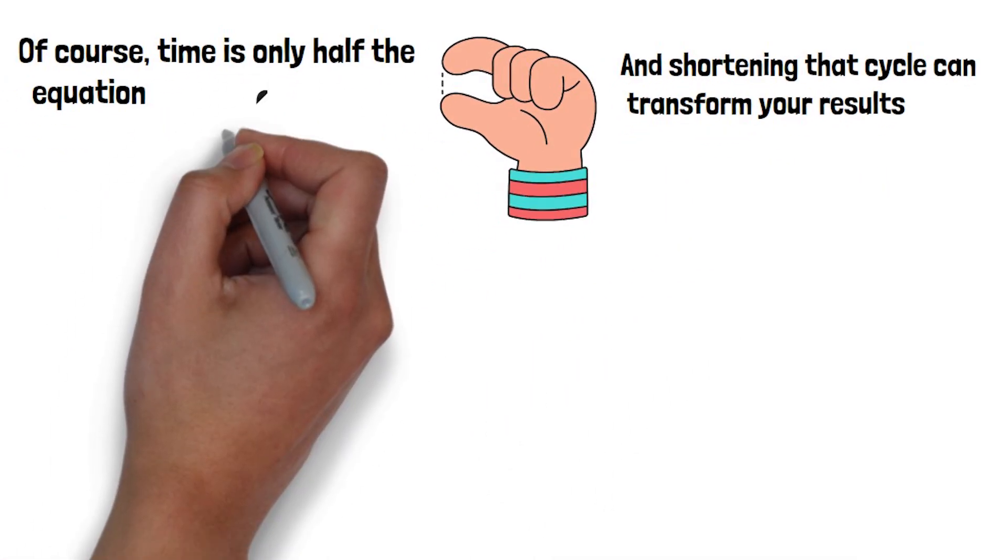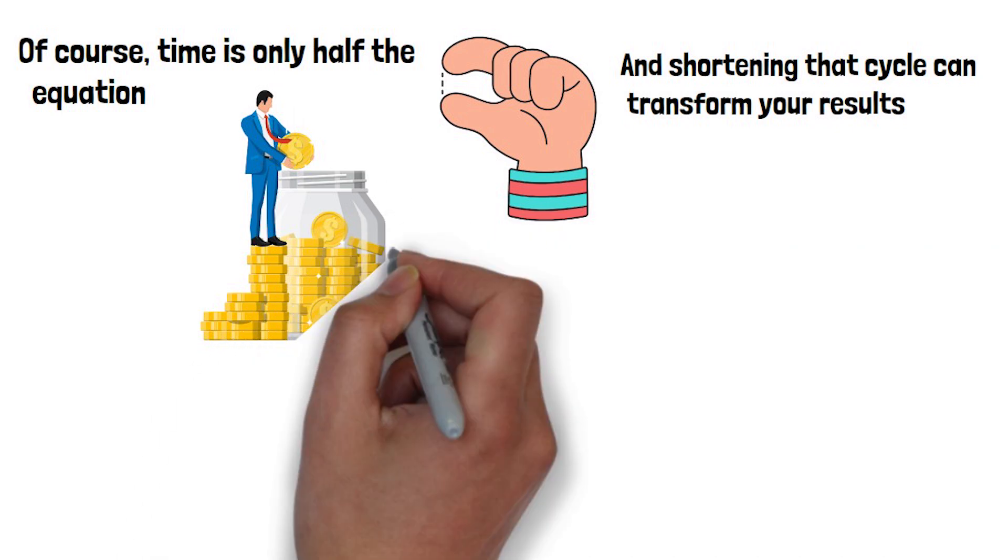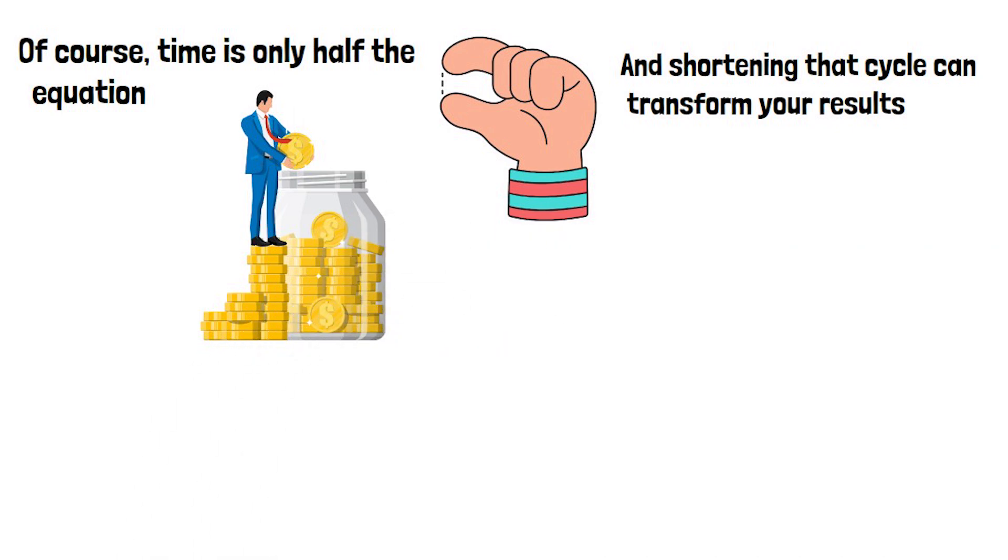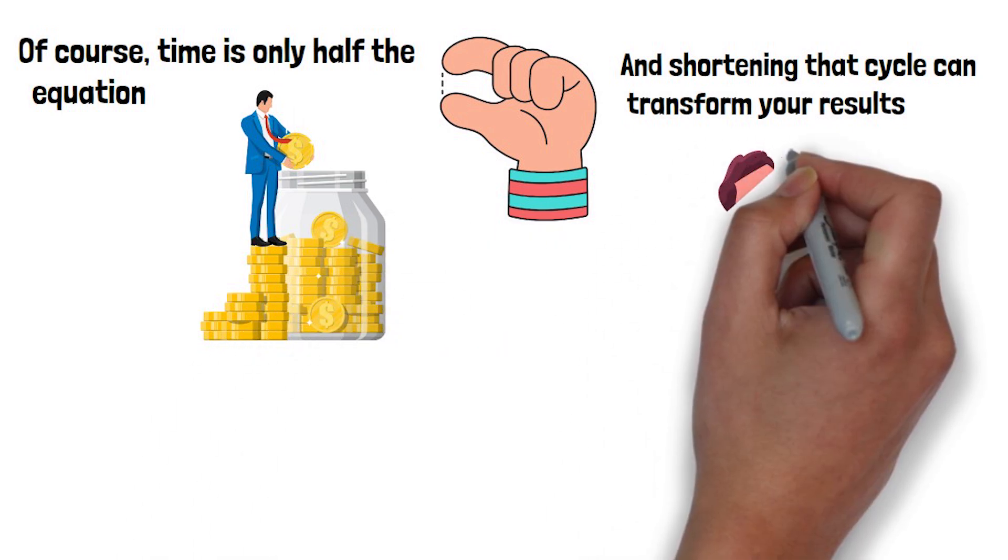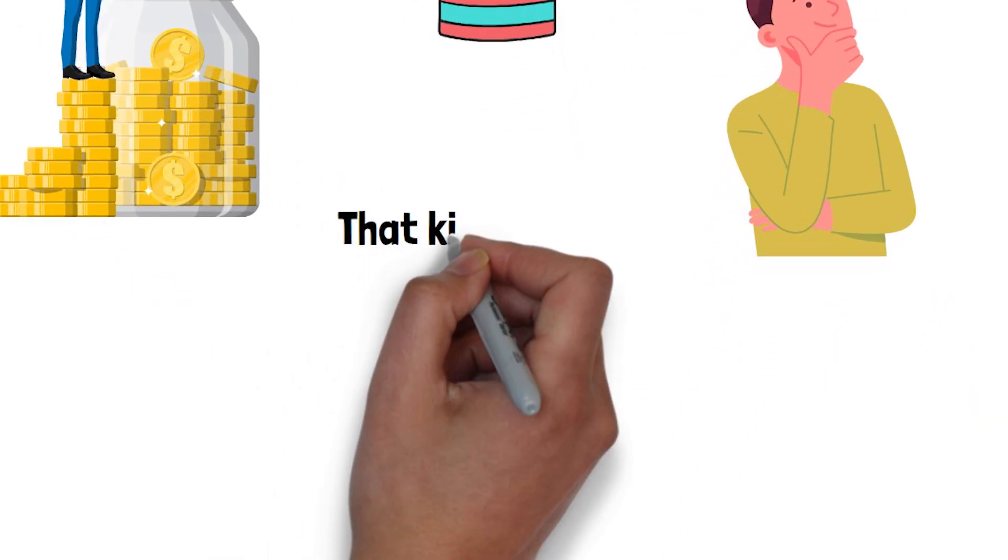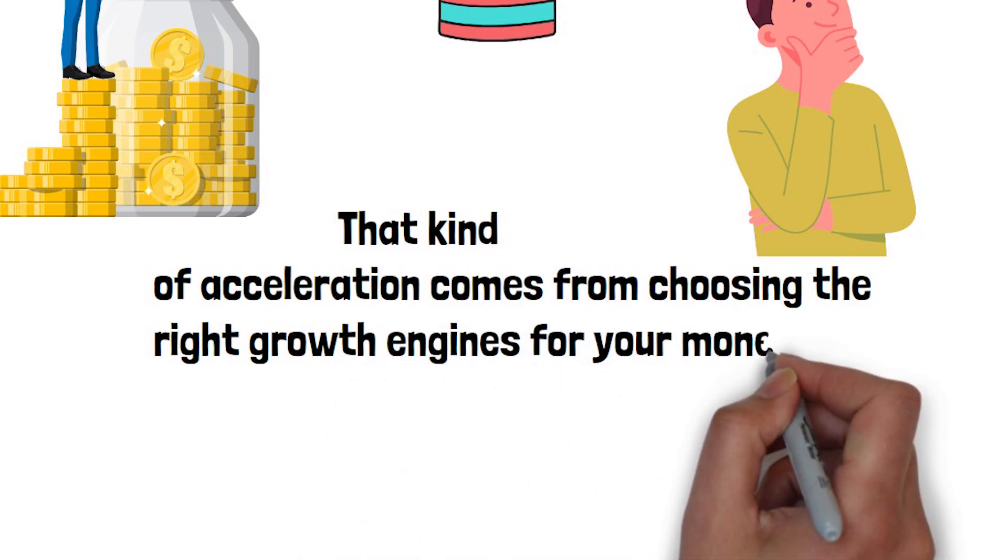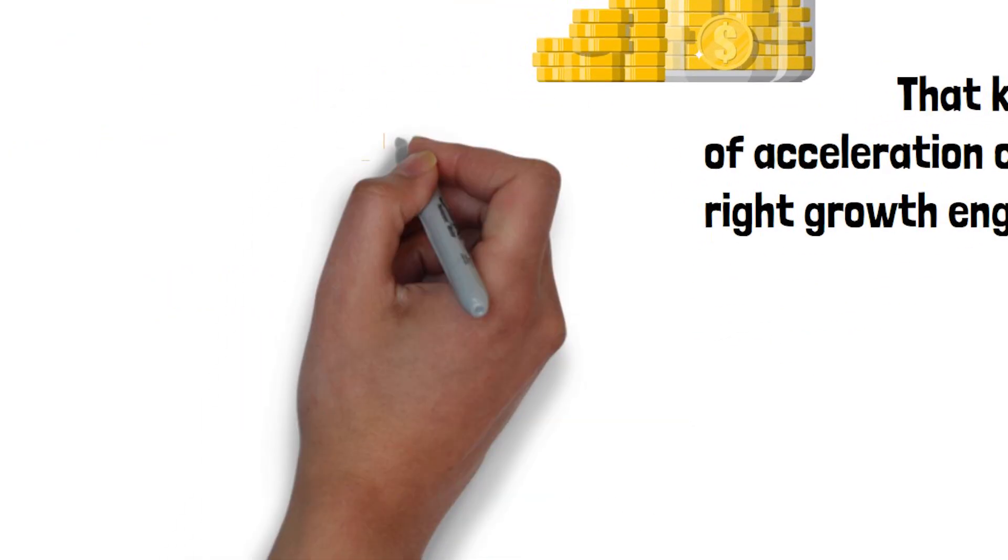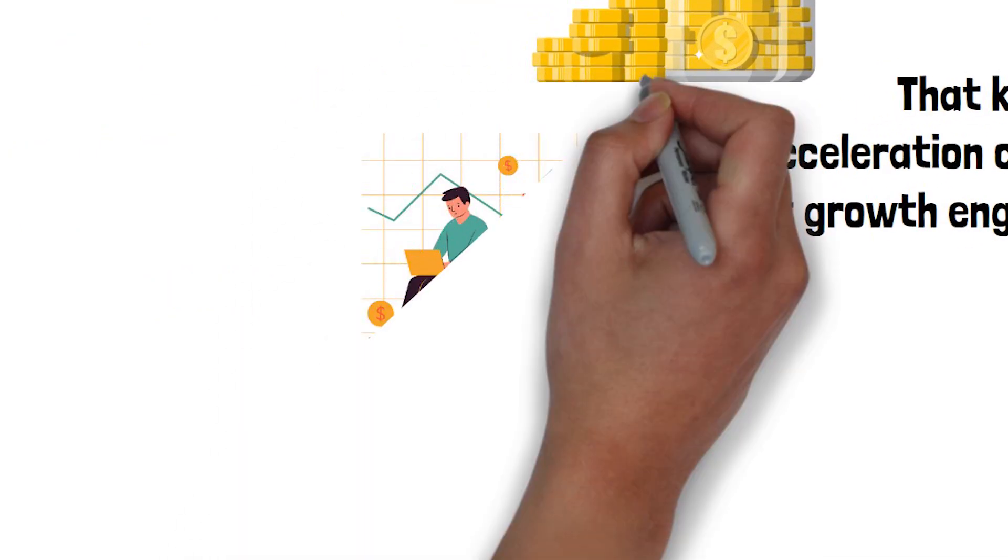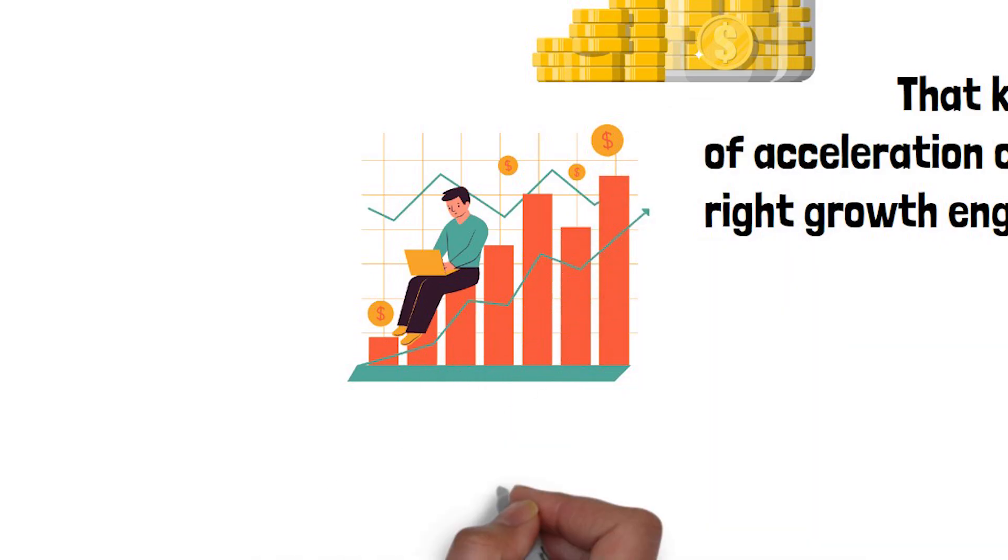The choice of where to put your money plays a big role in how fast it grows and how well it can keep up with the rising cost of living. Imagine cutting your doubling time from decades to just a few years. That kind of acceleration comes from choosing the right growth engines for your money. Different assets run at very different speeds.